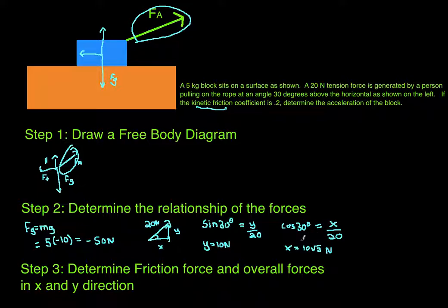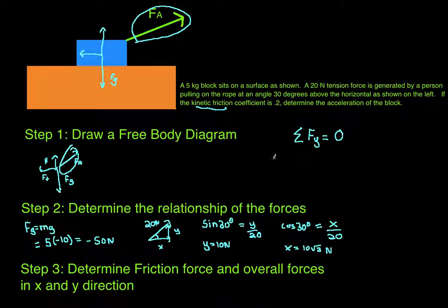Now that we've resolved the components, this block is not accelerating up or down — it's only going to move left or right. It won't levitate off the table, and it won't go down through the surface. So the summation of forces in the Y direction is equal to zero. The forces acting in the Y direction are: the force of gravity, the normal force, and the applied force in the Y direction — that 10 Newton value.